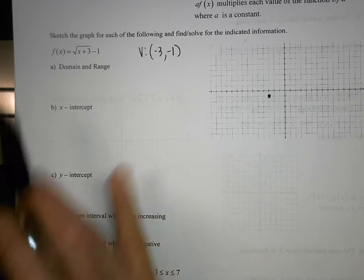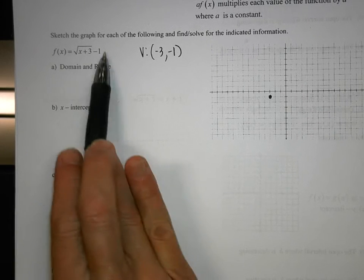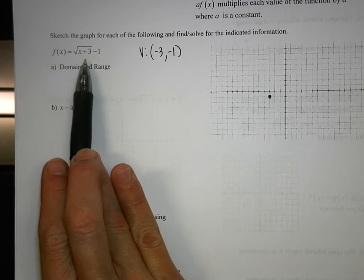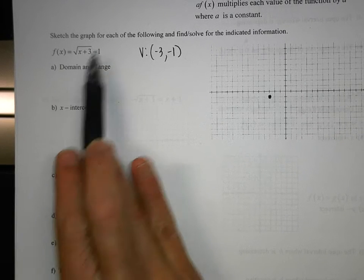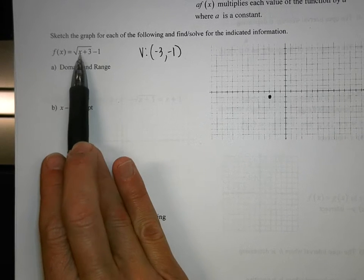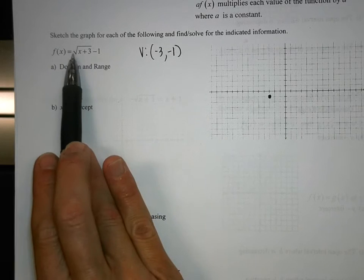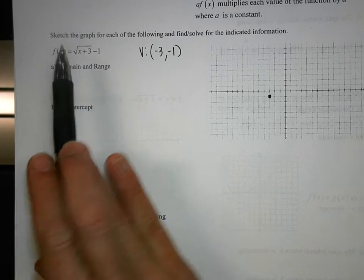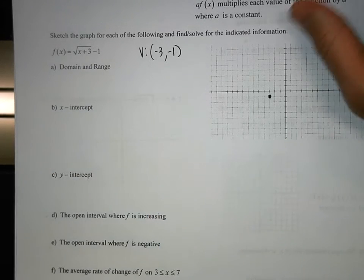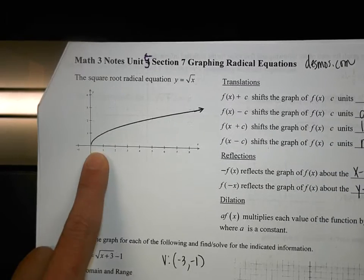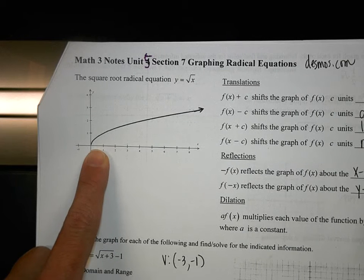Do you see any reflections or anything in here? There's no negative X value in here, no negative outside. And so my curve will end up looking something like this — curving up and going out.